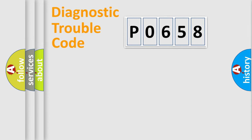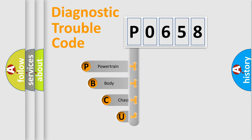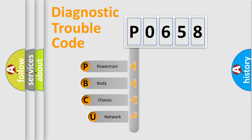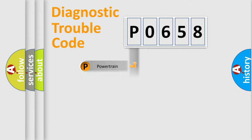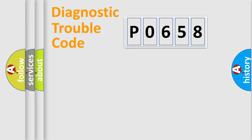Let's do this. First, let's look at the history of diagnostic fault code composition according to the OBD2 protocol, which is unified for all automakers since 2000. We divide the electric system of an automobile into four basic units: Powertrain, Body, Chassis, and Network.